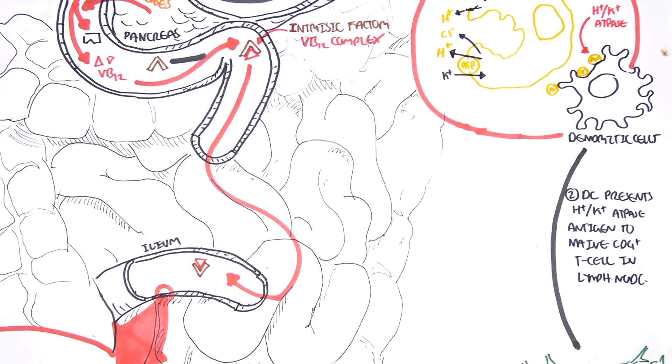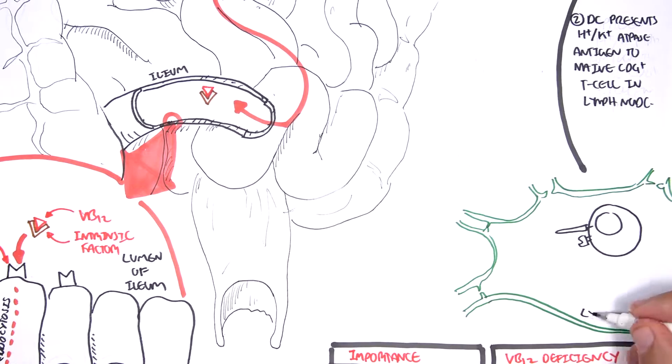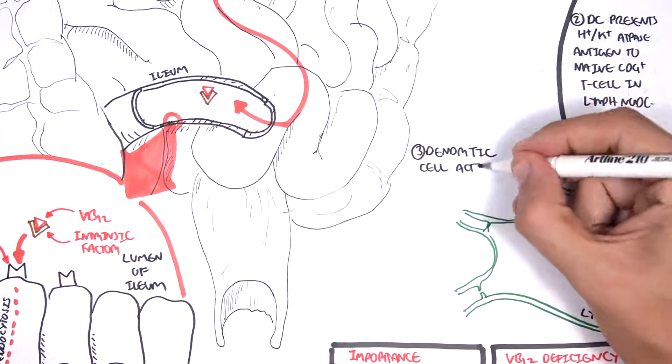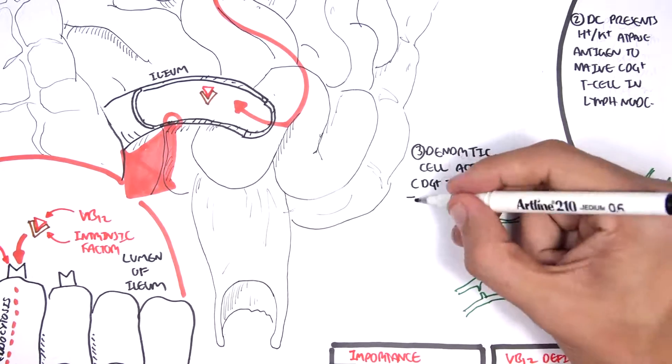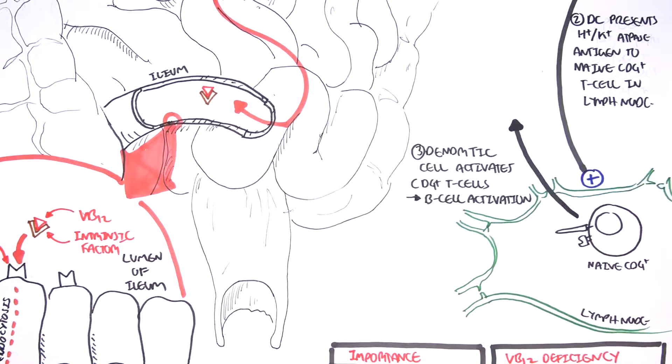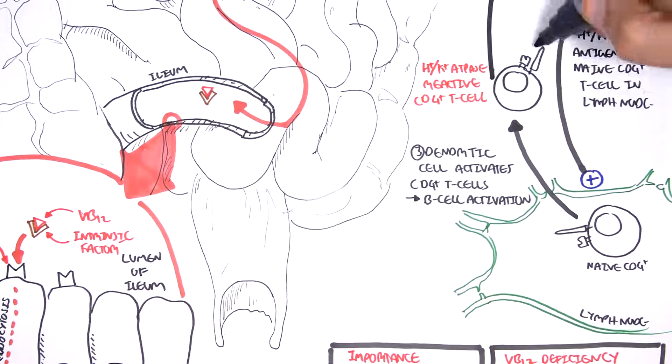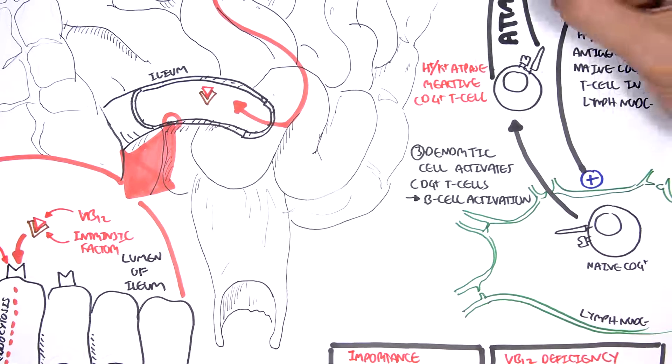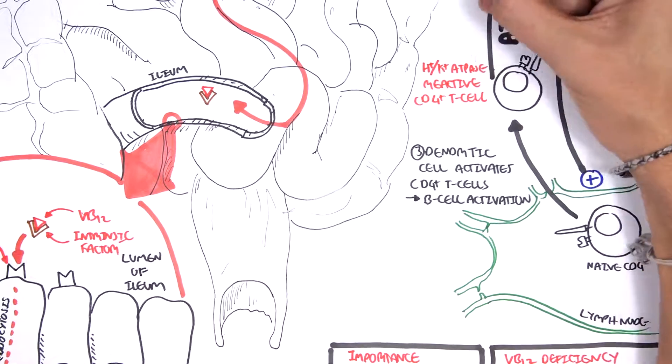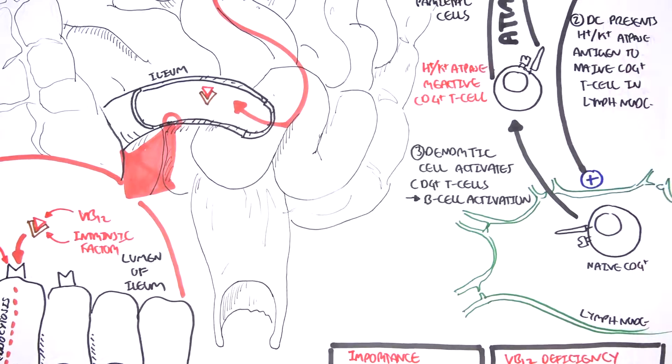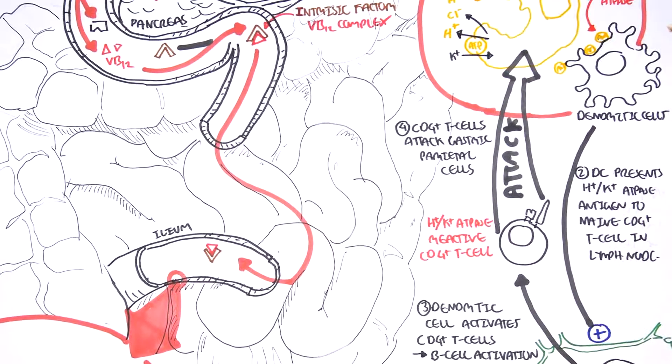So here is the lymph node with a naive CD4 T cell. When the naive CD4 T cell is stimulated to become a T helper cell, it will stimulate B cells to produce antibodies against this antigen. The CD4 T cell will also become hydrogen-potassium ATPase pump reactive and basically cause an immune response towards the parietal cells, which contain these hydrogen-potassium ATPase pumps. So the immune system attacks these parietal cells.